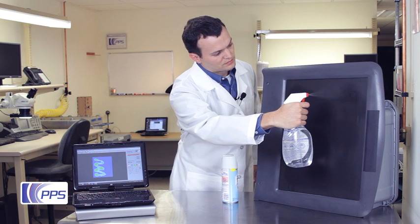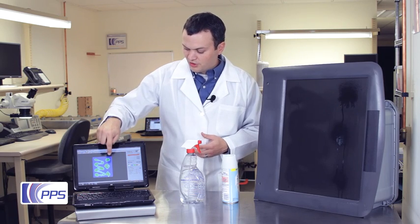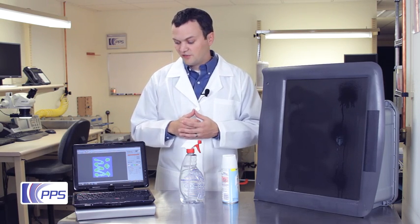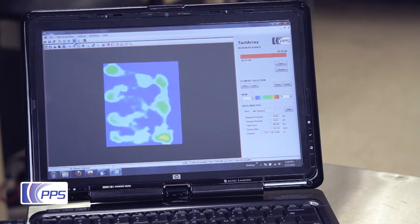Now we'll take a look at the spray bottle. Here, the display shows the three locations where I sprayed the bottle, and it's even sensitive enough to show these runoff points where the fluid accumulated and ran down the surface of the sensor.